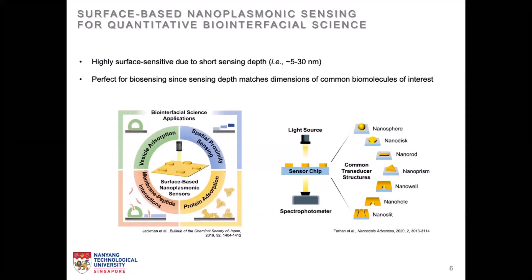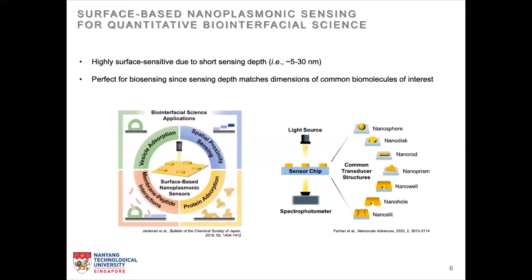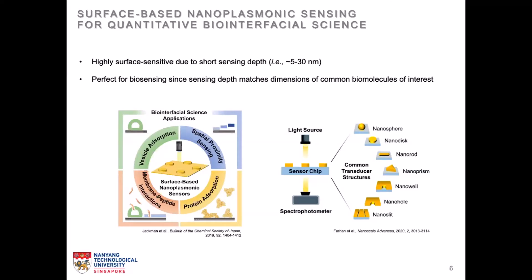The works performed in the group can be divided into four quadrants. We use nanoplasmonics for studying vesicle adsorption — understanding how vesicles deform upon contact with the substrate. We use it for spatial proximity sensing to understand how lipid composition affects the distance between lipid bilayers and the underlying surface. We can also use it for studying protein adsorption — what happens to a protein molecule when it contacts a substrate surface, whether it undergoes adsorption-induced conformational change or denaturation, whether it spreads out or remains rigidly attached, whether it forms monolayers or multilayers, and what happens on curved versus flat surfaces.